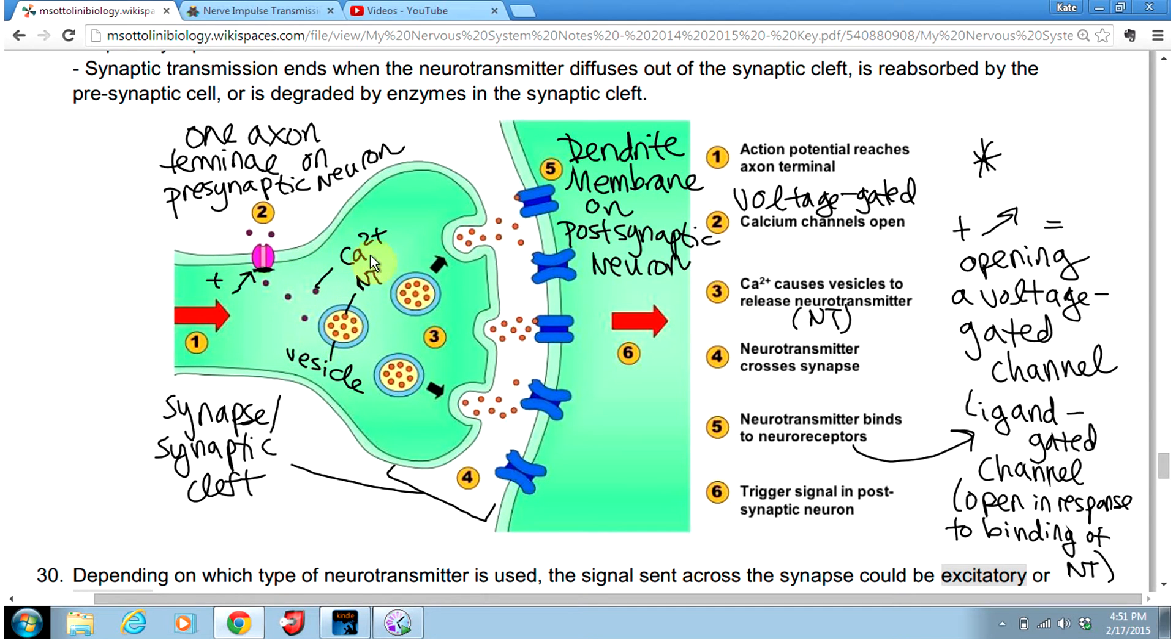Calcium entering the axon terminal is going to cause these vesicles—which are little membrane circles containing neurotransmitter particles—to fuse with the axon terminal membrane and release the neurotransmitter molecules into the synapse.